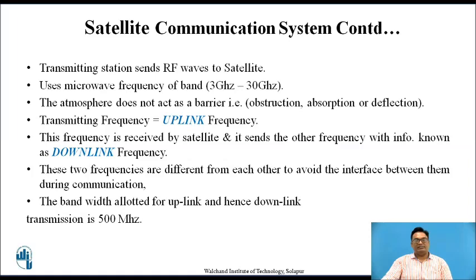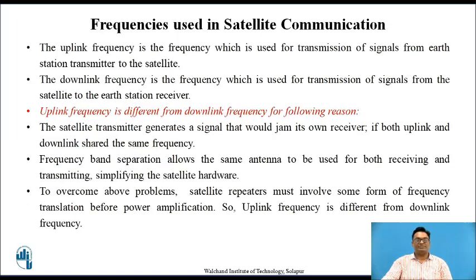These two frequencies are different from each other. To avoid interference between the two frequencies during communication, the bandwidth allotted for uplink and downlink frequency is about 500 MHz. The uplink frequency is used for transmission of signals from the Earth station to the satellite. The downlink frequency is the reverse — it is the frequency used for transmission of signals from the satellite to the Earth station receiver.